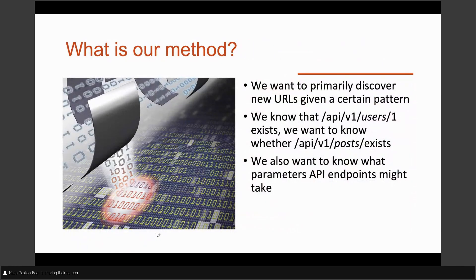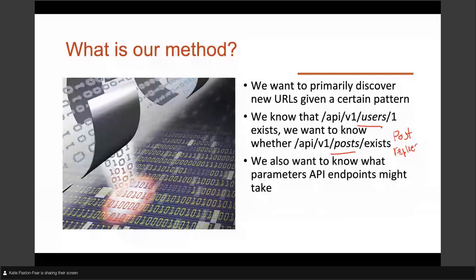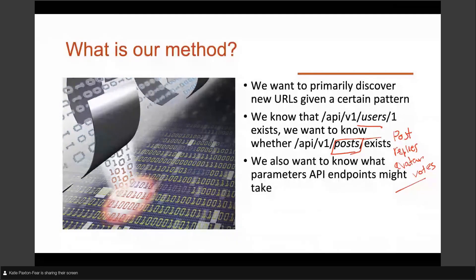There are two kinds of assumptions we can make. If users exist, we might expect something like posts to exist depending on the application. For something like a forum, we might expect posts, replies, avatars, votes — we can start making assumptions about what might be there. We make this assumption: if this resource exists, then we think these others might also exist, though it depends on the target.